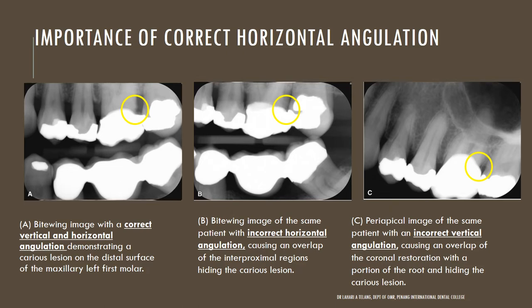The importance of correct horizontal angulation: a bitwing taken with the correct horizontal and vertical angulation demonstrates a caries lesion on the distal surface of the maxillary left first molar, as circled in image A. The same area in image B has the caries obscured due to incorrect horizontal angulation and overlapping of the proximal surfaces. In image C, a vertical periapical view of the same area, the proximal caries is also obscured due to incorrect vertical angulation. If a lesion is missed yet suspected clinically, another image should be taken to rule out the presence of caries.